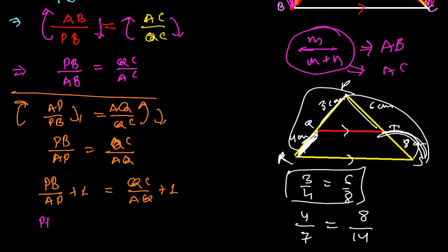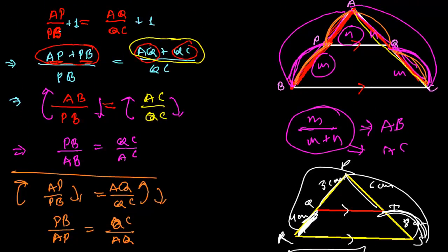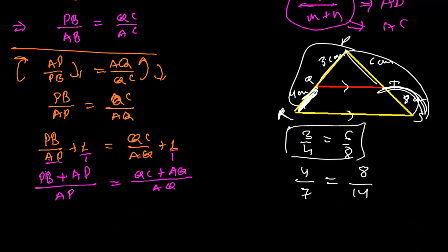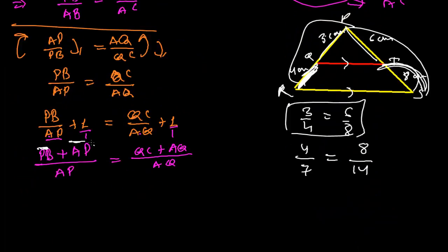So PB/AP + 1 becomes (PB + AP)/AP, and the LCM of AP and 1 is AP. Similarly, QC/AQ + 1 becomes (QC + AQ)/AQ. Now PB + AP is just the whole line AB, so we get AB/AP on the left side.